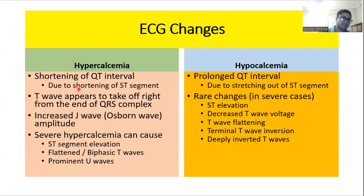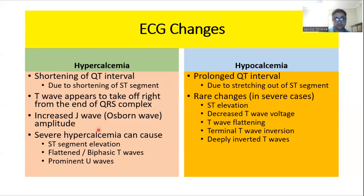In hypercalcemia, the QT interval is shortened due to shortening of the ST segment. In addition, T-waves appear to take off right from the end of the QRS complex, and there is an increased J wave, also called Osborne waves. When hypercalcemia is very severe, there can be ST segment elevation, flattened or biphasic T-waves, and prominent U waves.